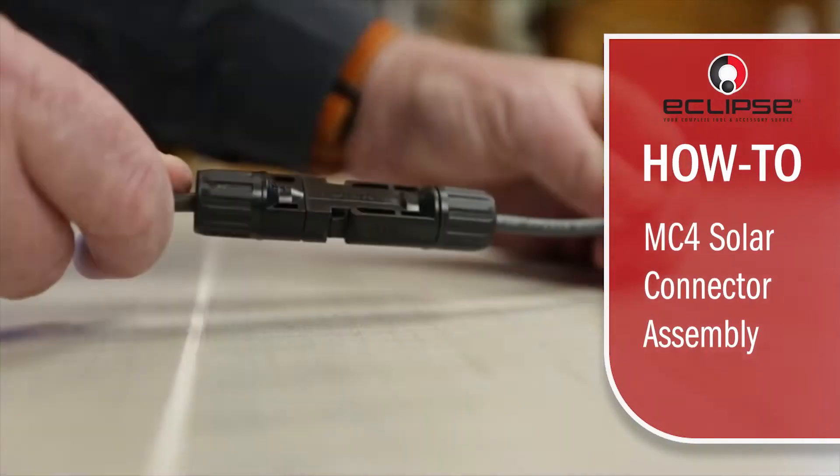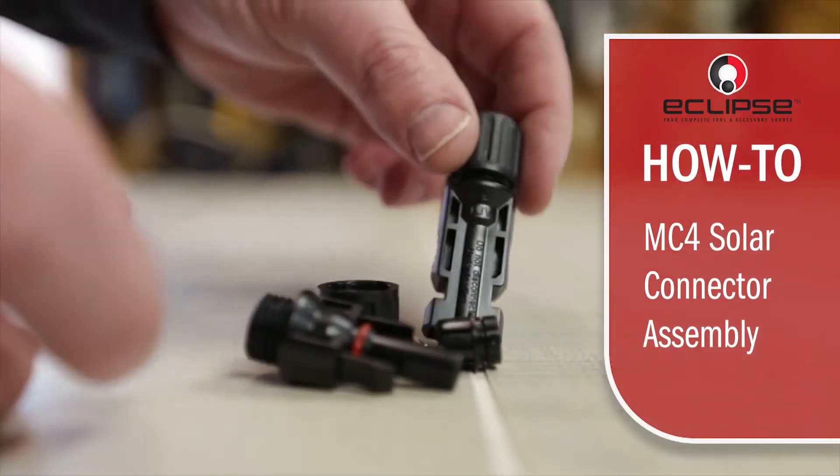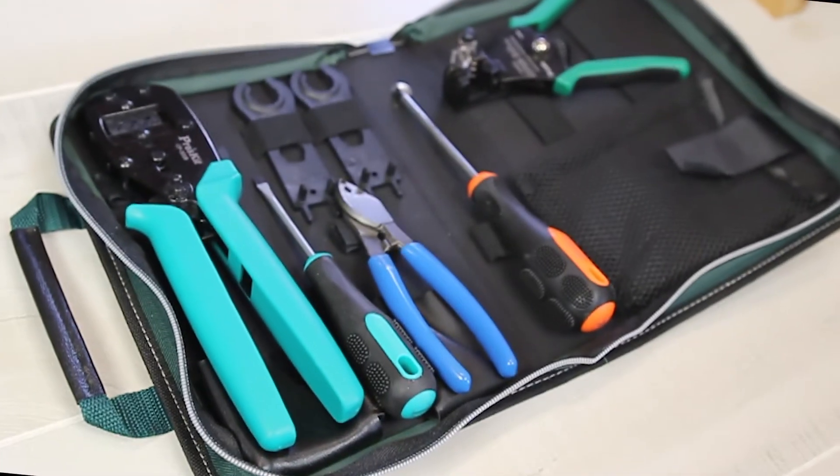Eclipse Tools. Today, we're going to show you how to assemble an MC4 solar connector using the Eclipse Tools solar crimping tool kit.